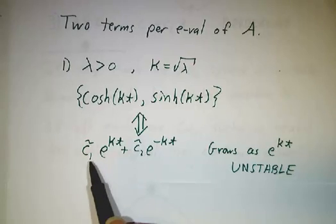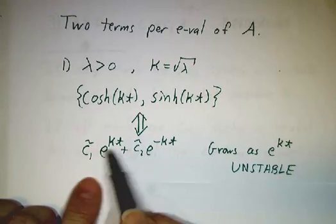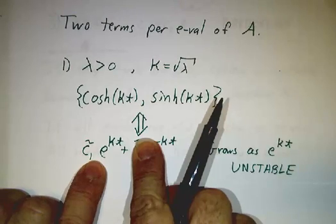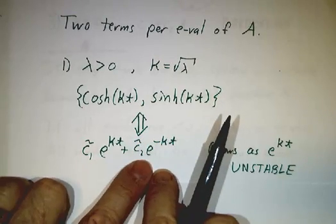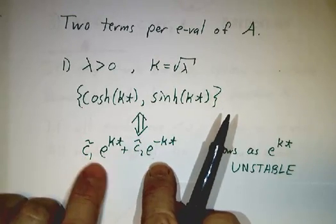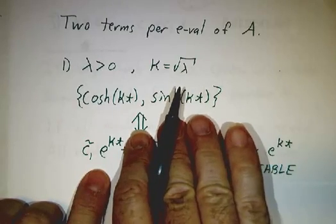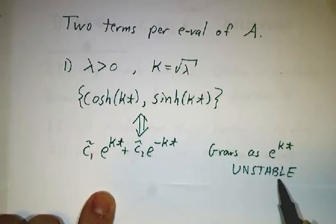Now, in the long run, unless this happens to be zero, this term is going to grow. This term is going to shrink, but this one's going to grow. And so the whole thing grows like e to the kappa t and it's unstable.